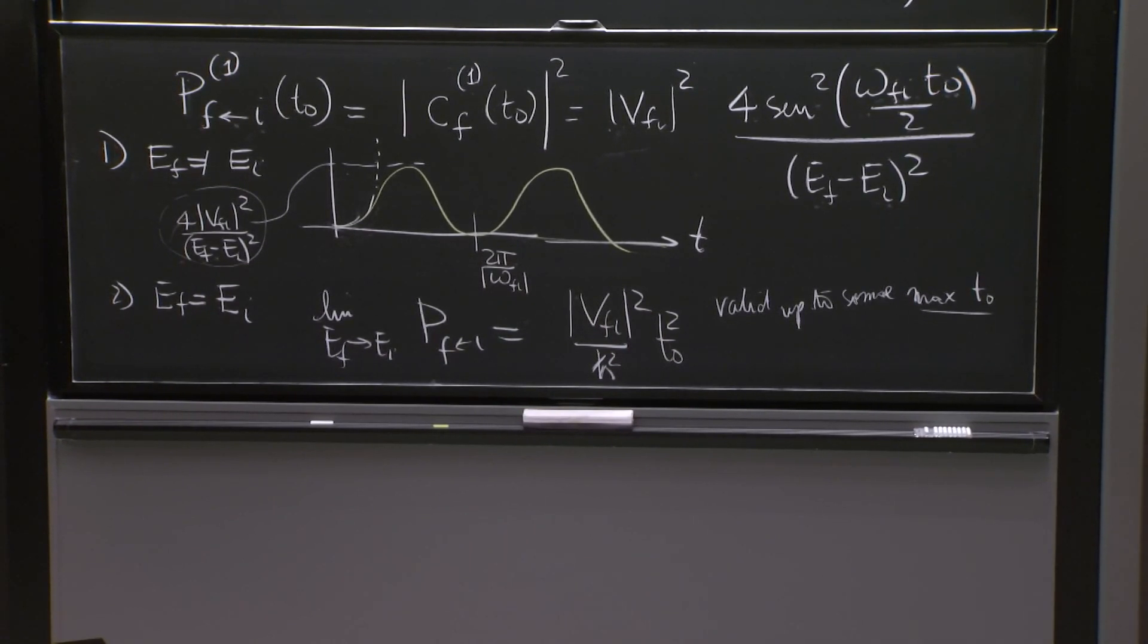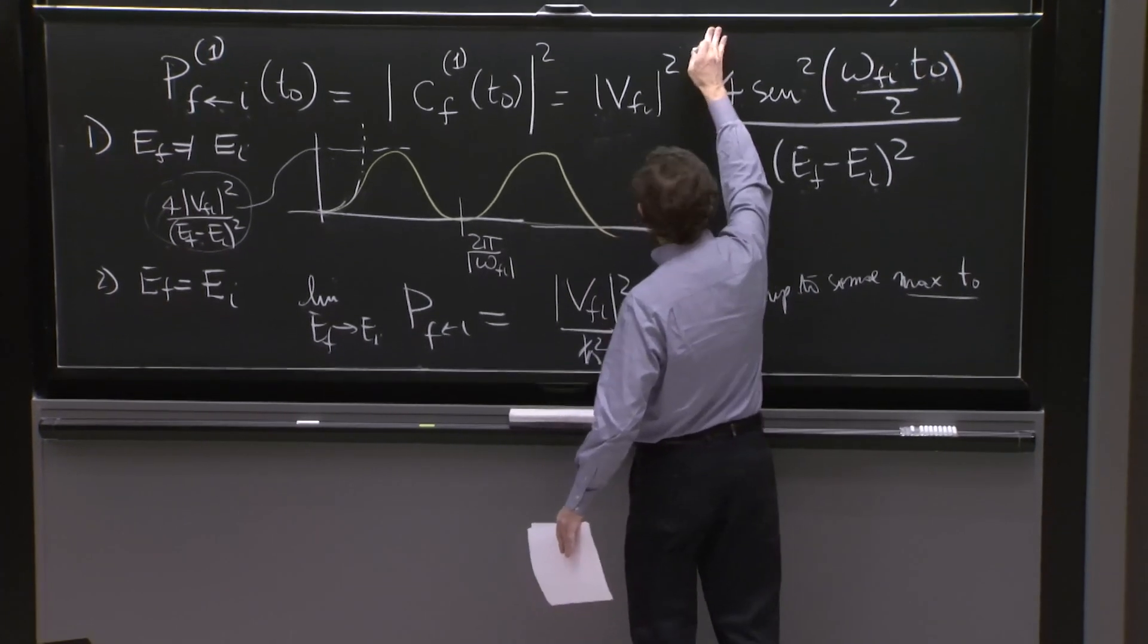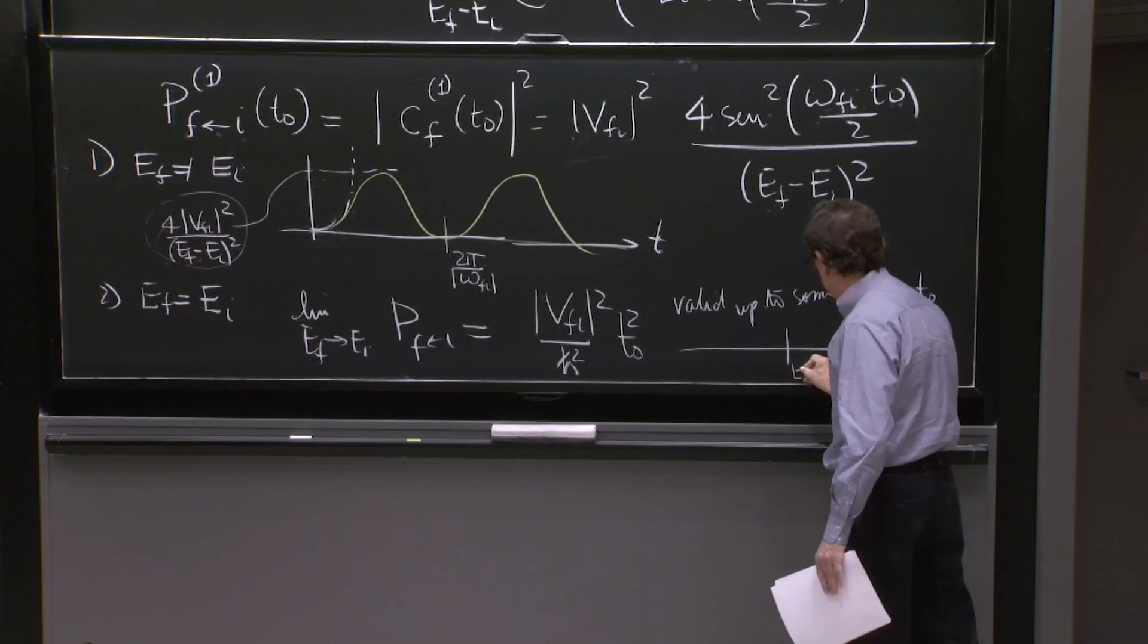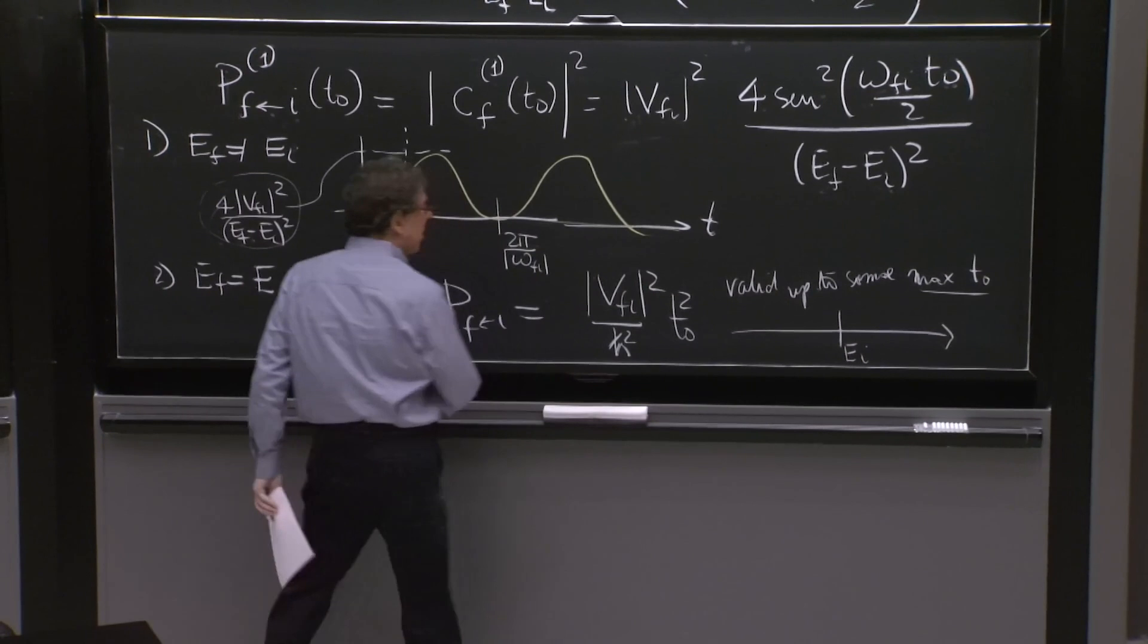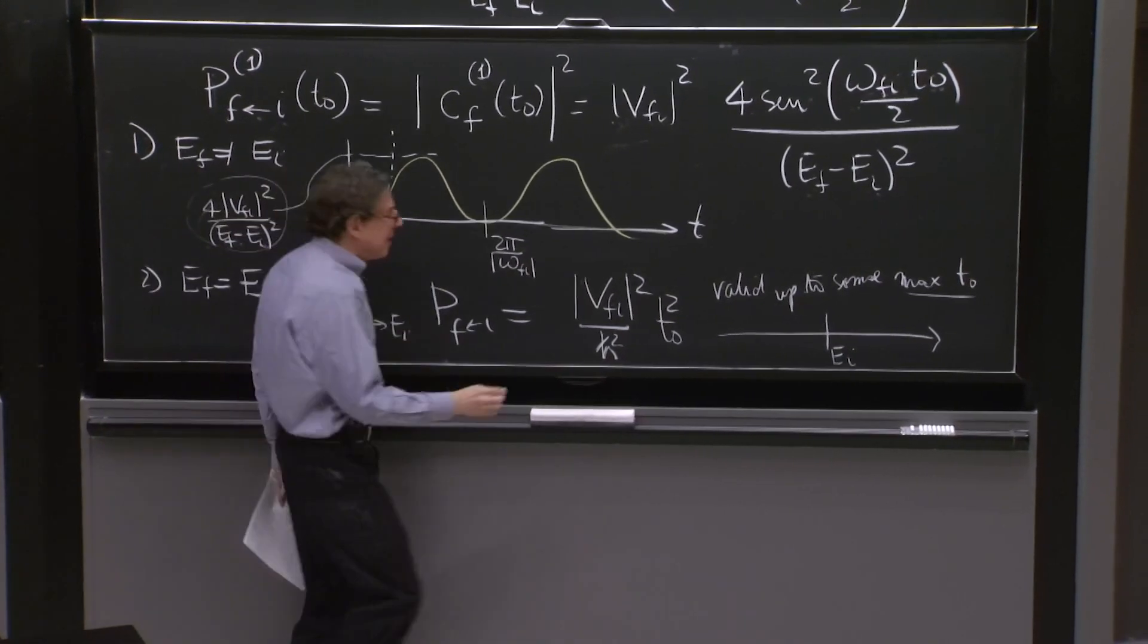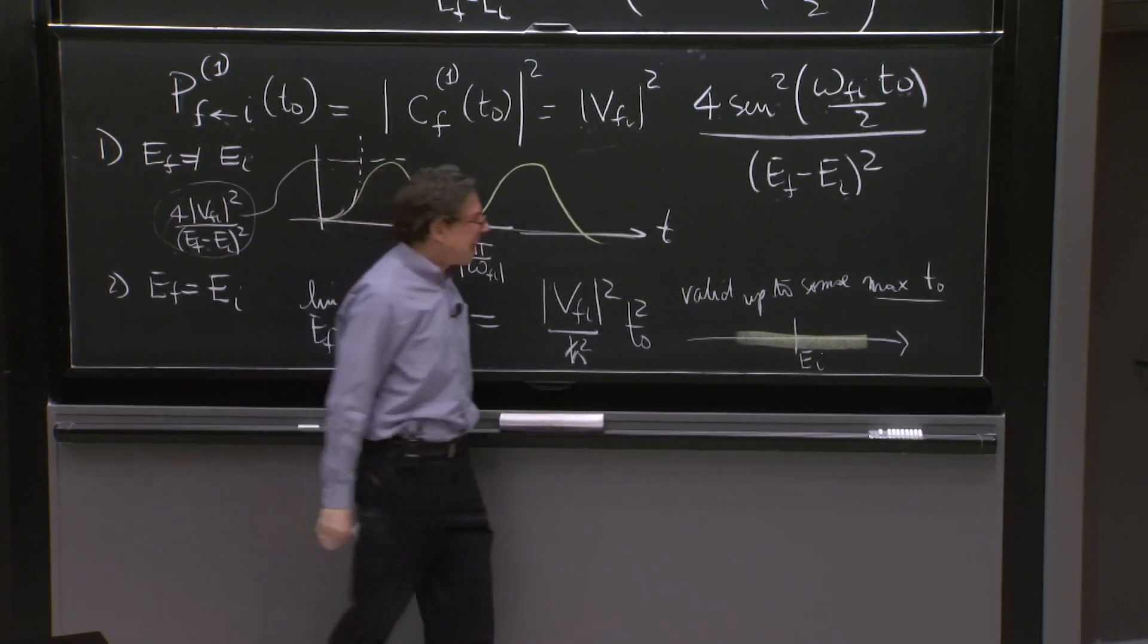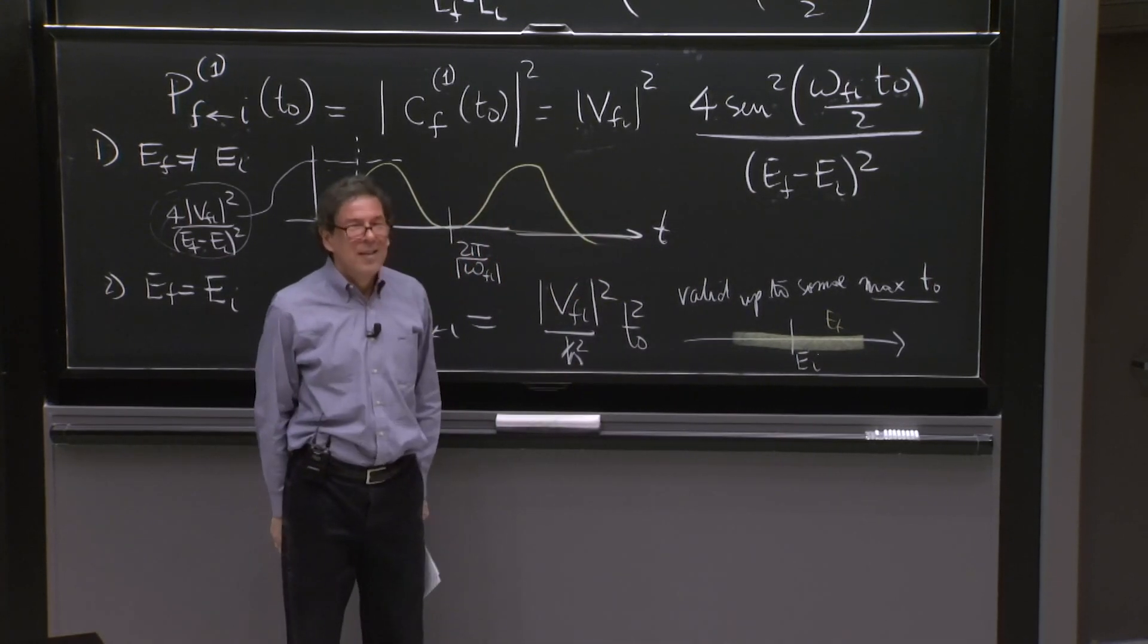So finally, what's going to happen? What are we aiming here? Well, we're aiming to the case where we have in the energy line, we have the initial energy EI. And then, we're going to have a continuum of final states that overlap with EI. They're all over there. That's EF all over there.